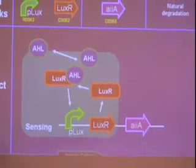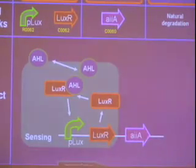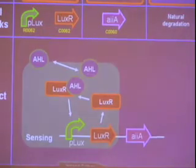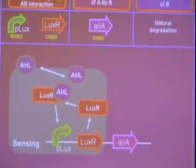So we've got a sensing part. AHL will diffuse into the cell, bind LuxR. Then this complex activates the Lux promoter. It produces more LuxR. So the amount of LuxR in our cell increases like the predator population will. So we've met this criteria here.